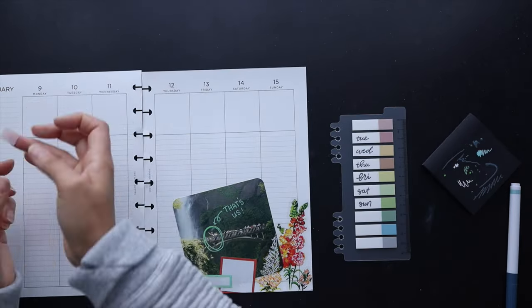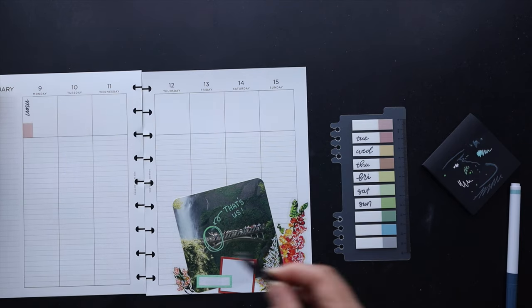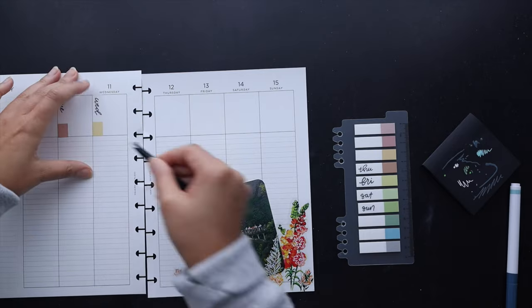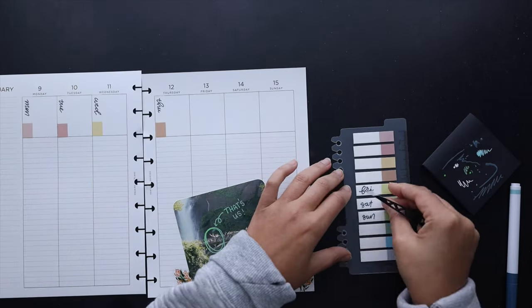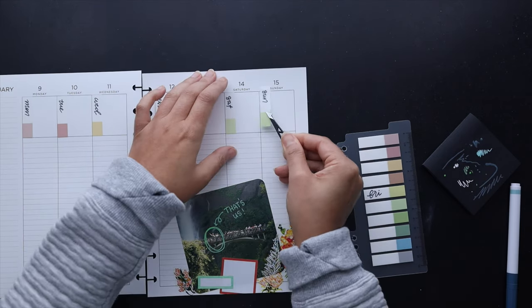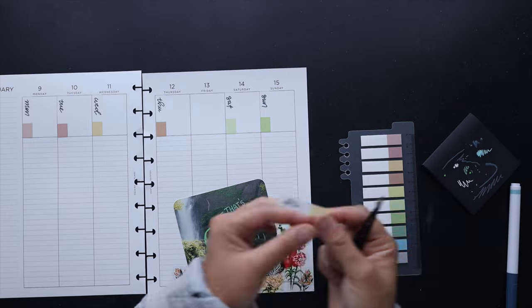So I went ahead and just did the days of the week here on these transparent stickies just kind of showing you how that would look with a dark gray acrylic pen and then I'm just going to layer them here onto the sheet so you can see how that looks. I'm using my tweezers just because I want to make sure that they have time to dry and I don't want to smudge the ink.